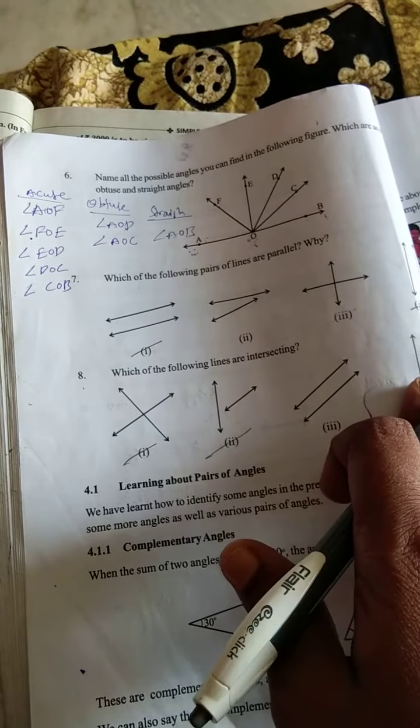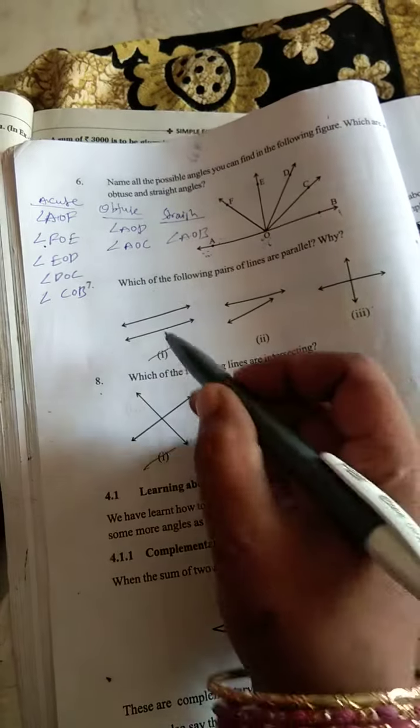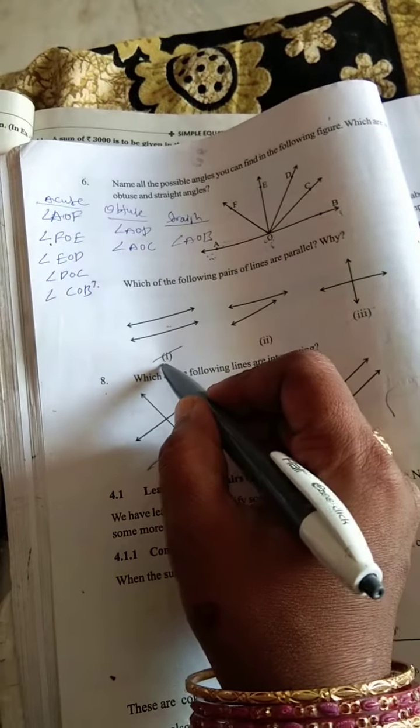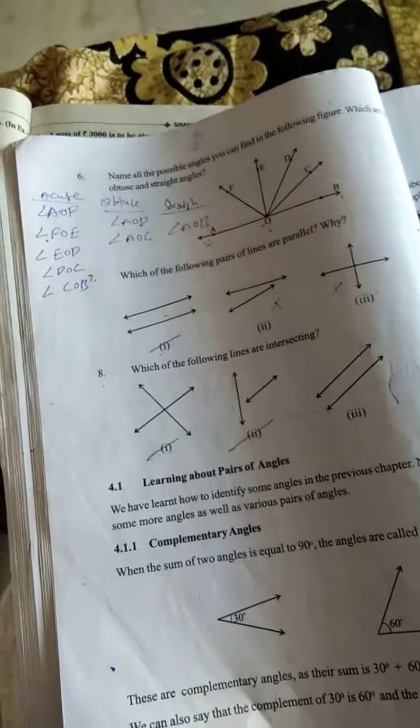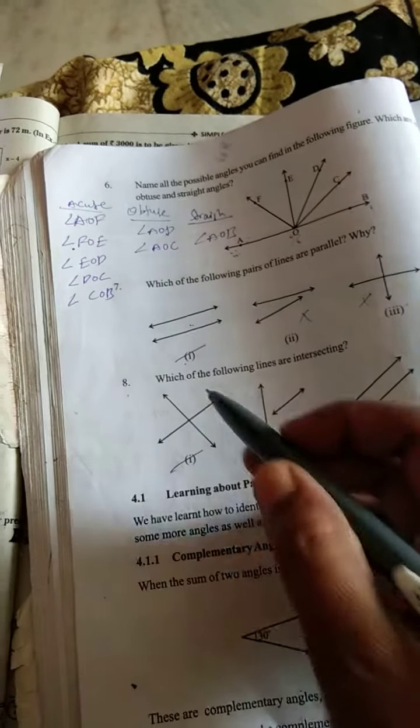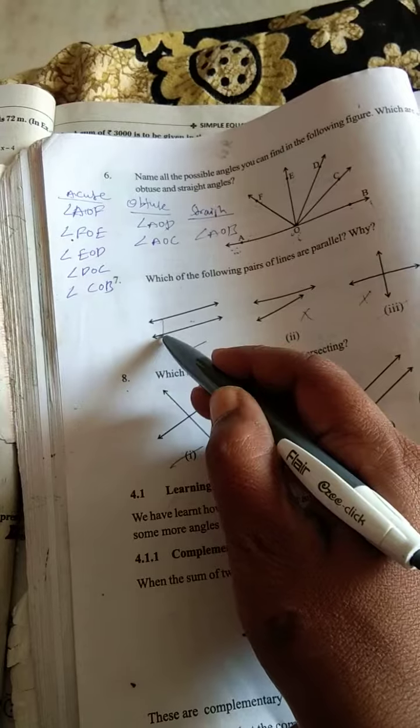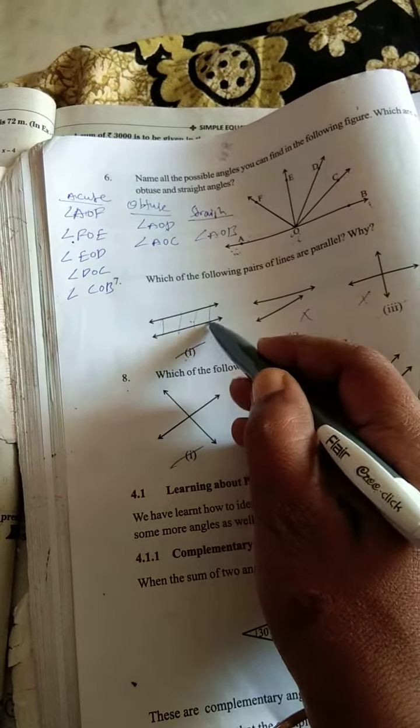Next, which of the following pairs of lines are parallel? Why? See, this is a parallel line. First figure parallel line. These are not a parallel line.